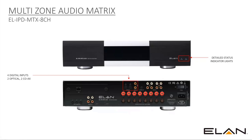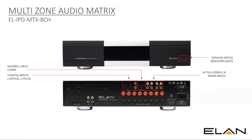Looking at the input section on the back: we have two coaxial and two optical digital inputs — these are four unique inputs. Next to that is the doorbell input, which is a stereo 3.5mm input used to connect doorbell devices like the G1 and SC100, though other devices can absolutely use it as well. Moving to the right, we have four pairs of analog RCA inputs — that's four stereo inputs — which can be broken up into eight mono inputs or any combination in between.